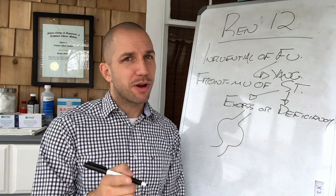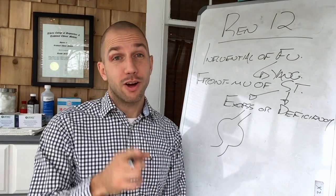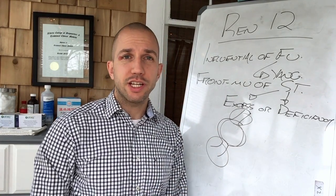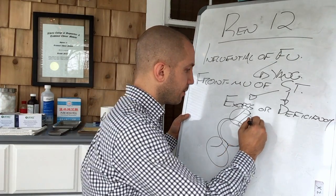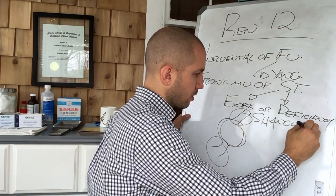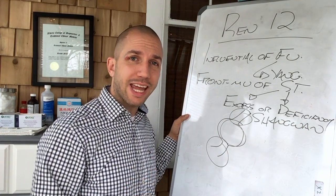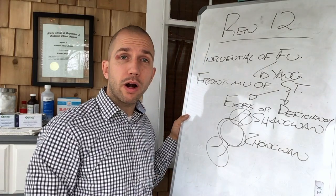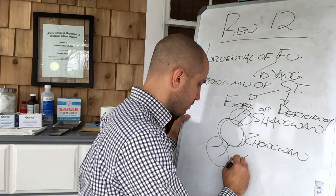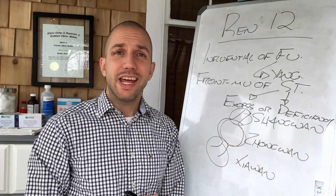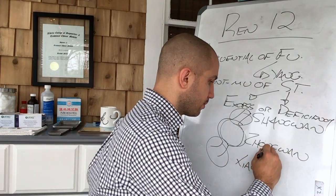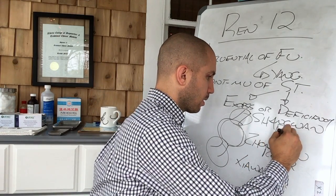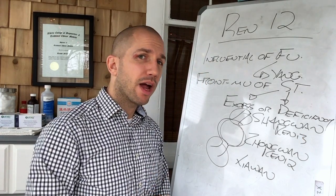I don't make a very good artist, but I make a pretty good acupuncturist. This is a pretty crude drawing of your stomach. We can divide it up into three sections. The upper section is called Shang Wan, or upper stomach cavity. The middle part is called Zhong Wan, or middle cavity. The lower part is called Xia Wan, or lower cavity. Zhong Wan is represented by REN-12, Shang Wan is represented by REN-13, and Xia Wan is represented by REN-10.